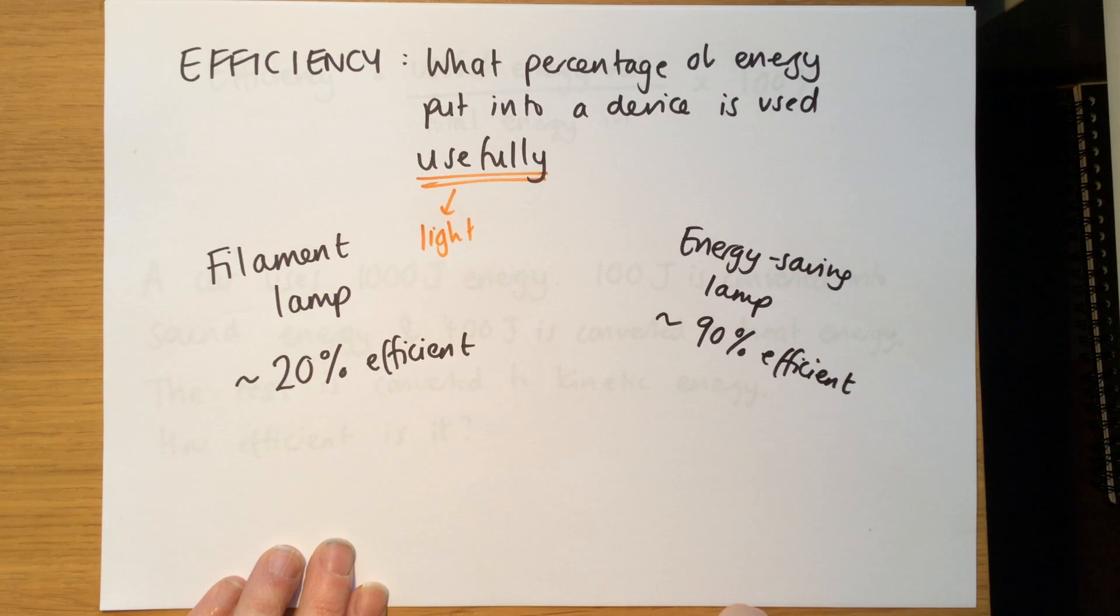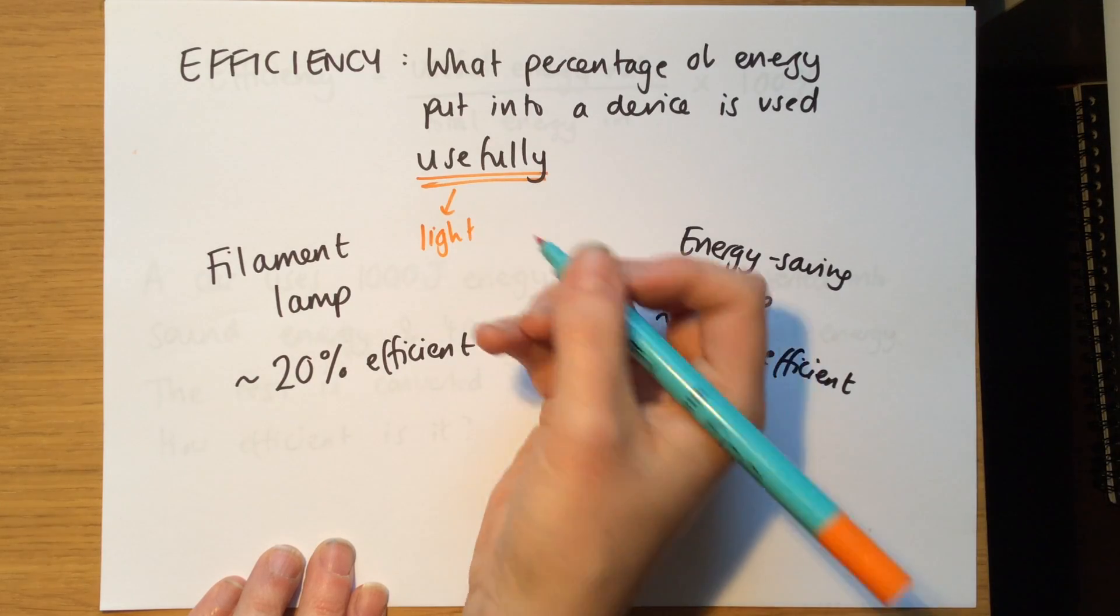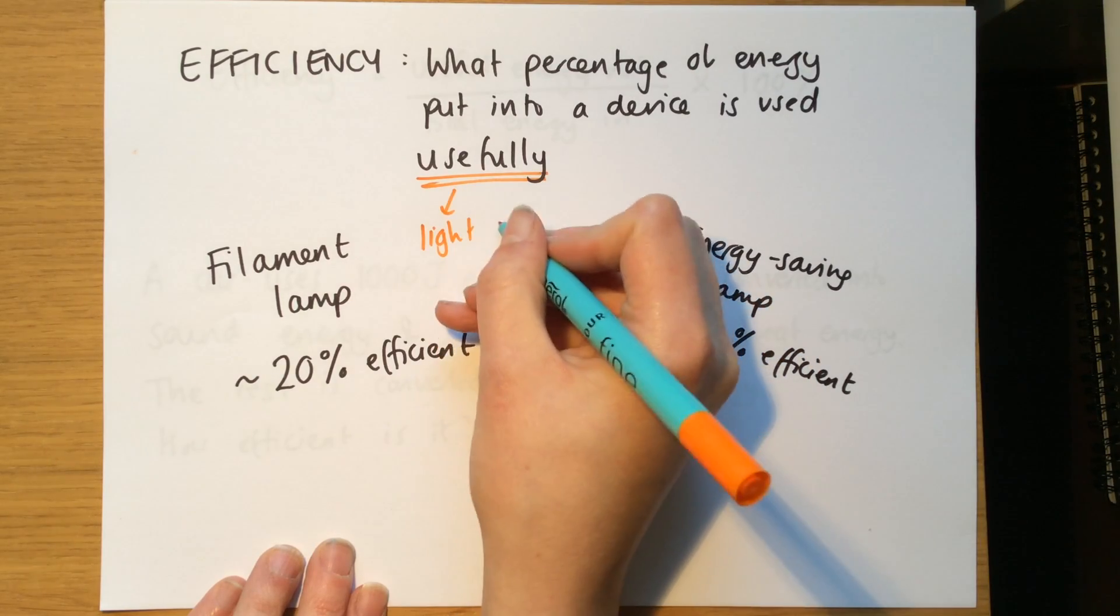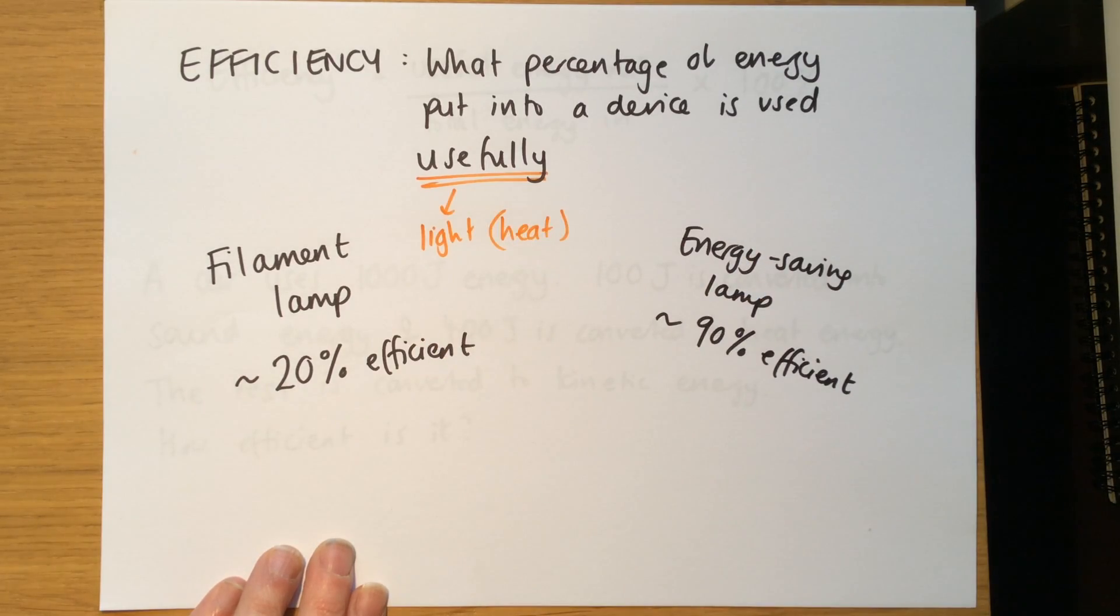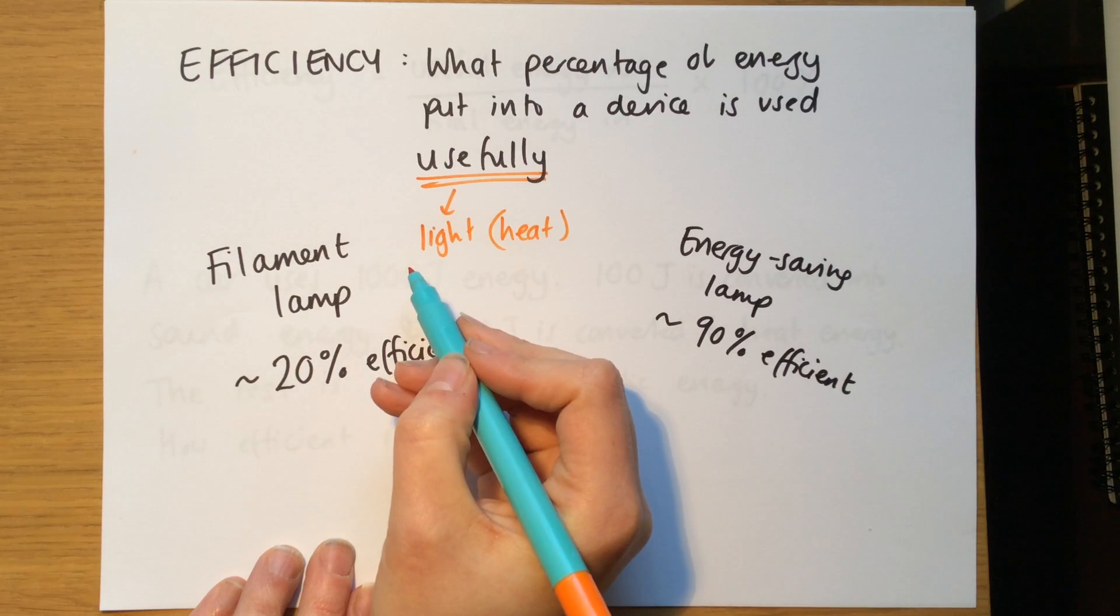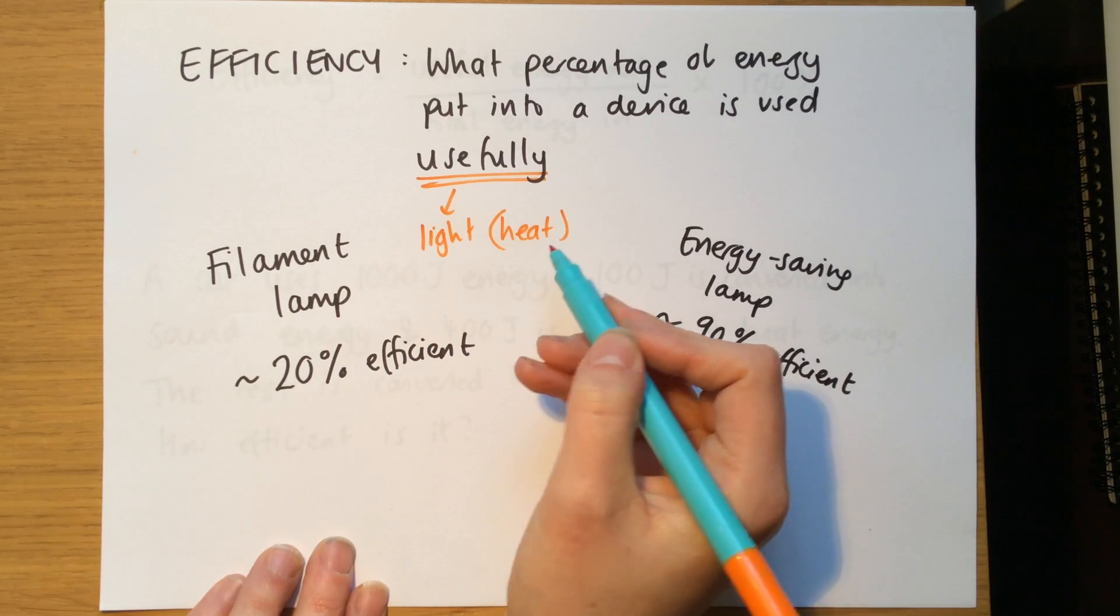The unuseful one, the wasted energy, is usually heat. You can feel, if you put your hand next to a lamp, you can feel that it's hot, okay, because it's giving out light and heat. So the light is the useful energy, but the heat is the non-useful energy, the wasted energy.